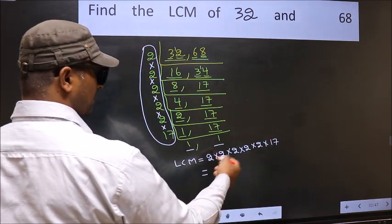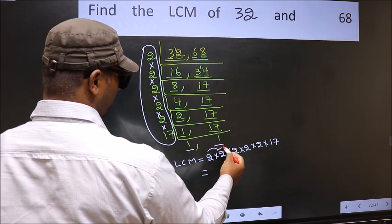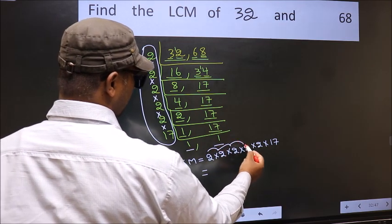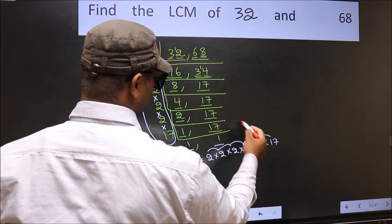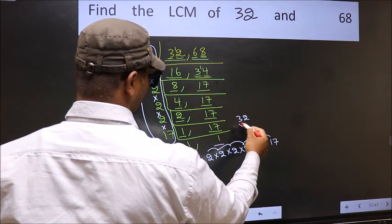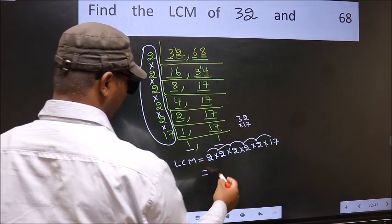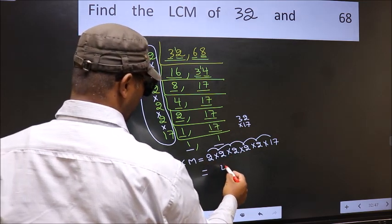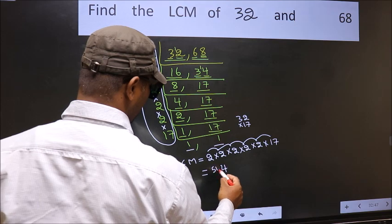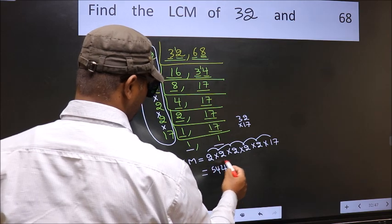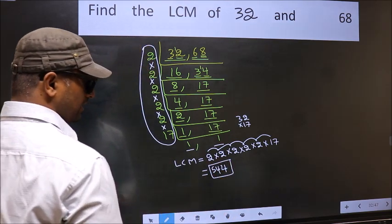So let us multiply these numbers. 2 into 2 is 4, into 2 is 8, into 2 is 16, into 2 is 32, into 17. 17 times 2 is 34, and 17 times 3 is 51 plus 3 is 54. So 544 is our LCM.